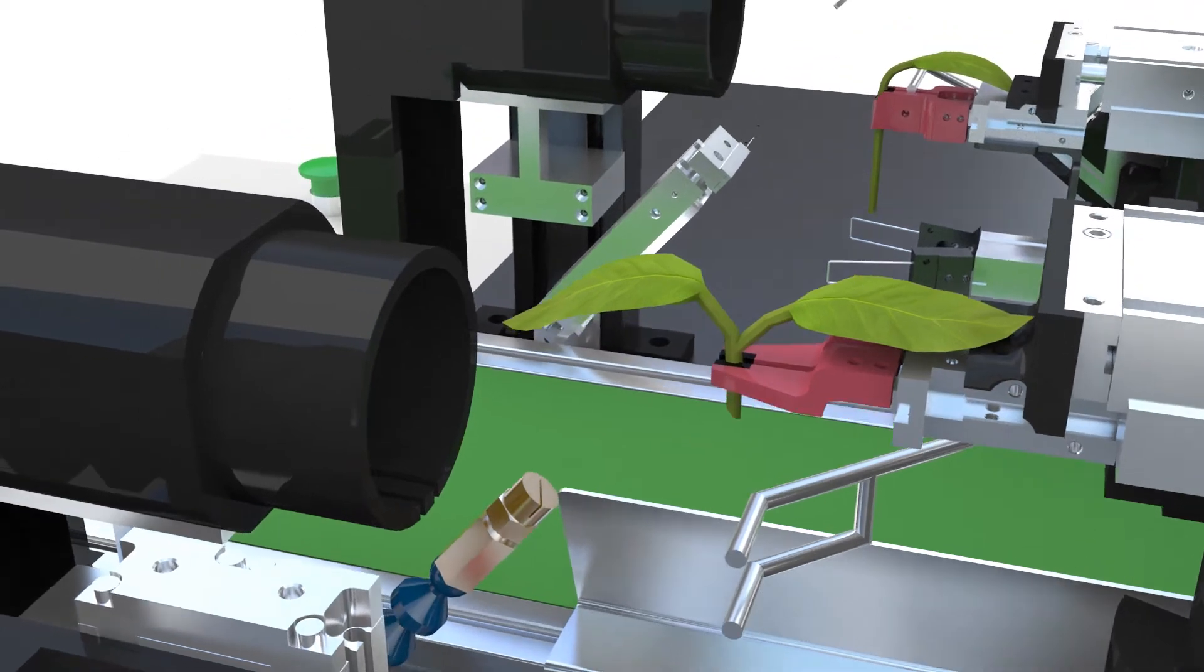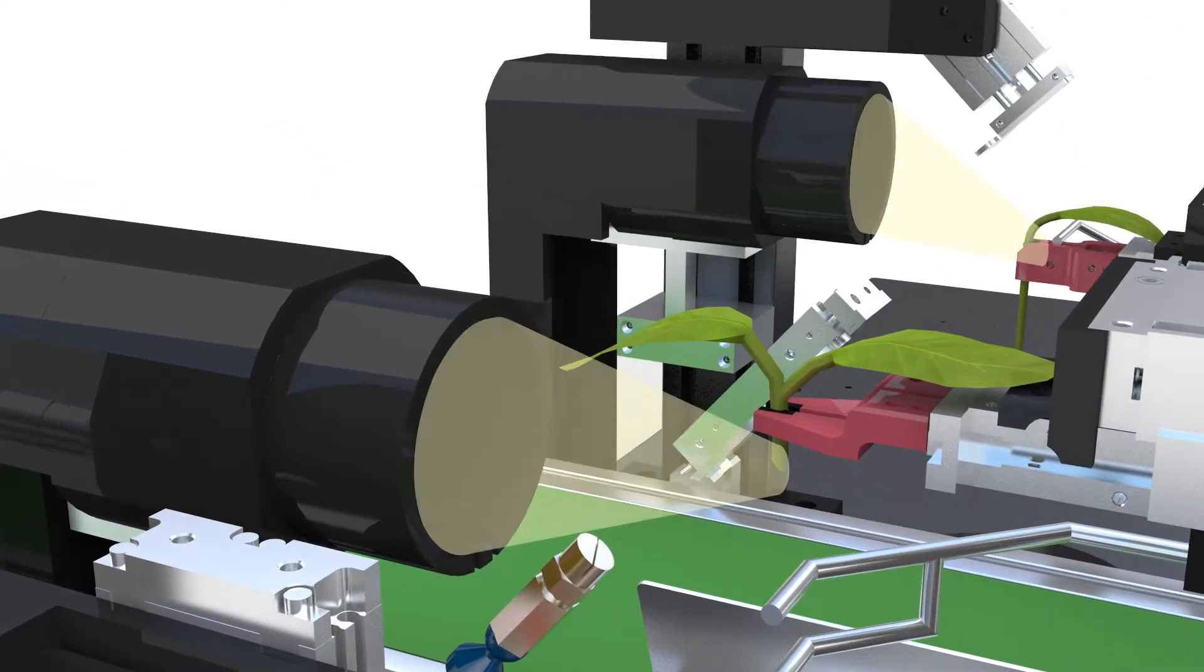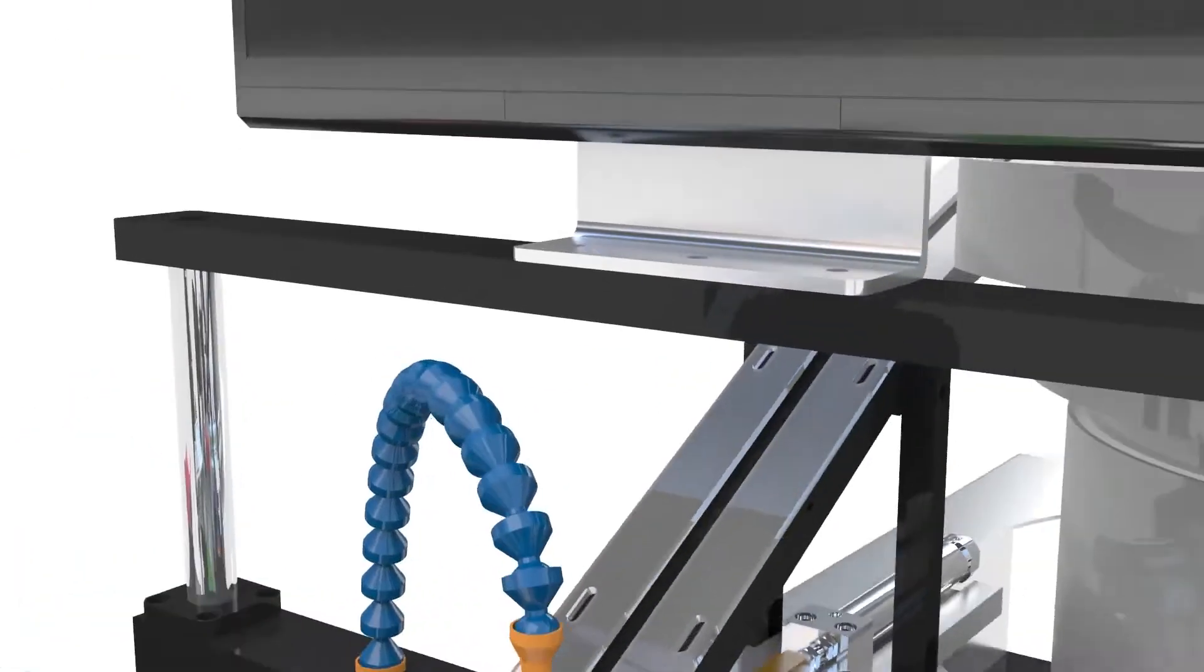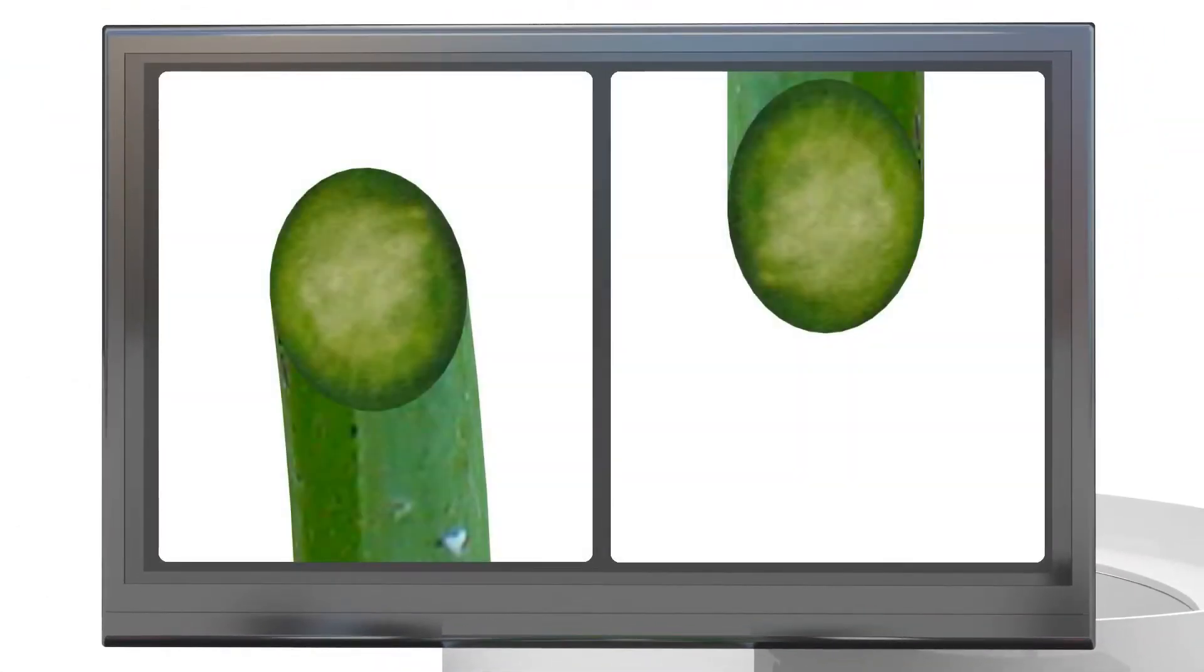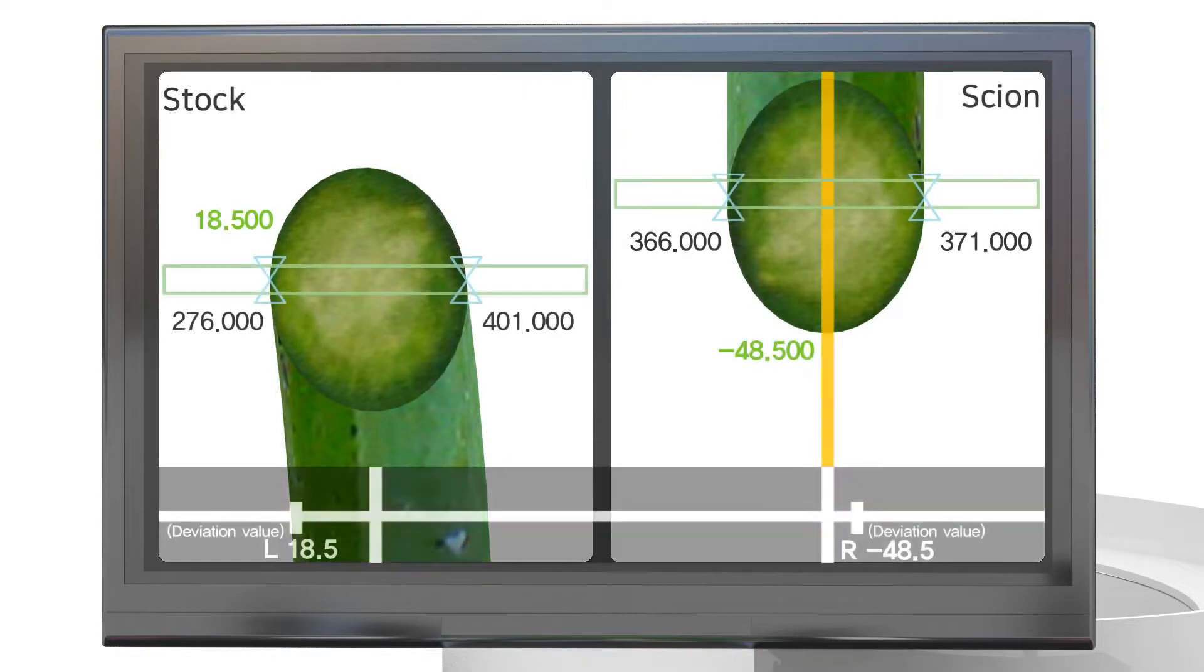The machine views the understock and grafted transplant with a vision camera and recognizes the outlying deviation value from the reference value in order to rotate the understock or transplant motor to the deviation value.